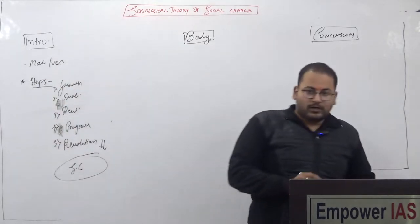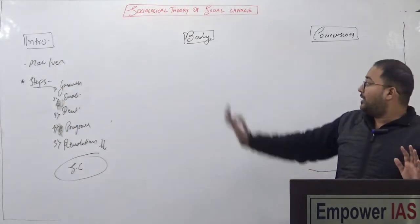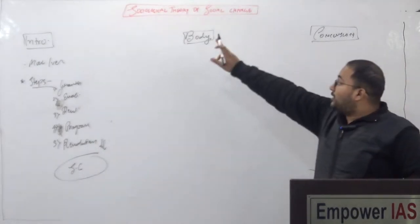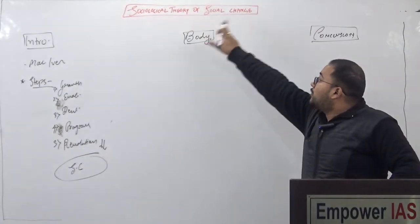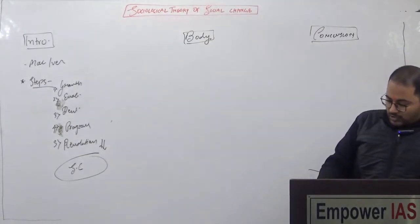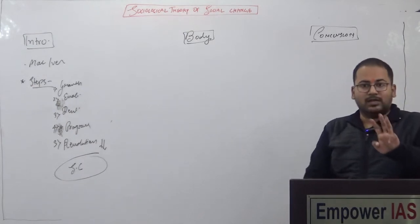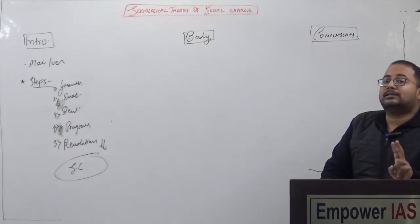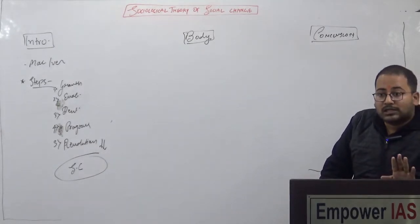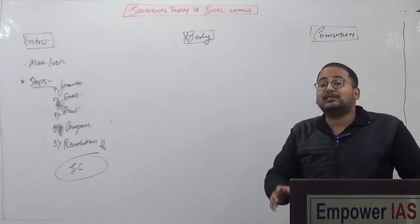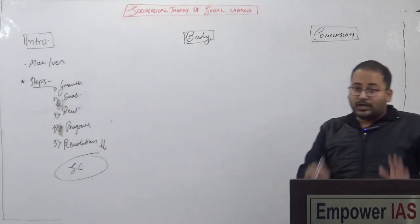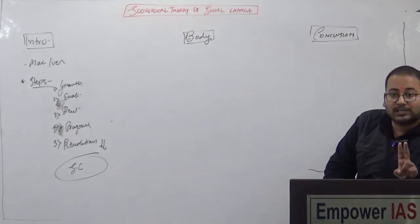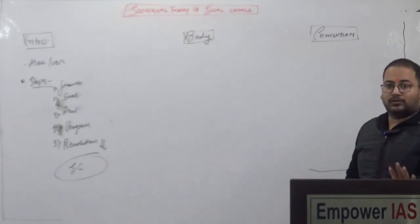So your introduction is over — definition from MacIver and then what are the steps related to social change. Now the most important point of our topic, that is the body. In sociological theory of social change, we will discuss three theories: the first is the linear or functional or evolutionary theory of social change, the second is the conflict theory of social change, and the third is the cycle theory of social change. In this lecture we will discuss only the first two theories.